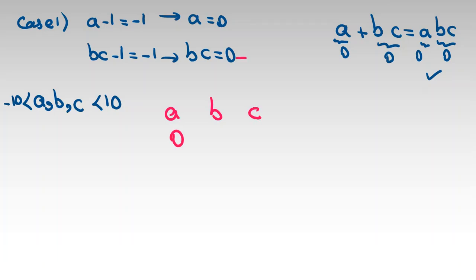Now bc = 0, so b = 0 or c = 0. If only b is zero, we can say c can be from negative 9 to negative 1, plus 1 to 9.